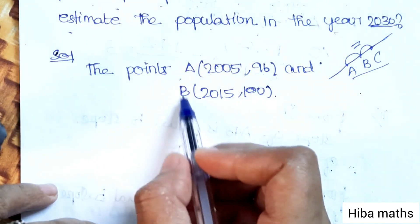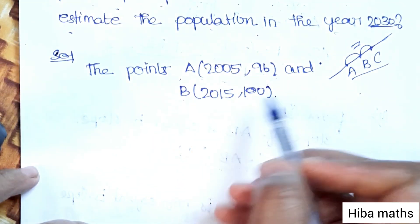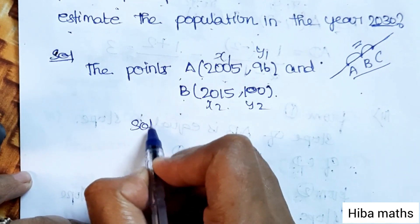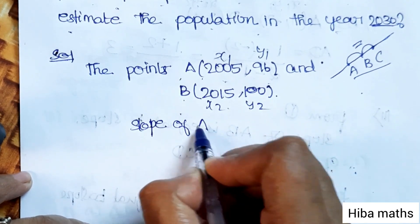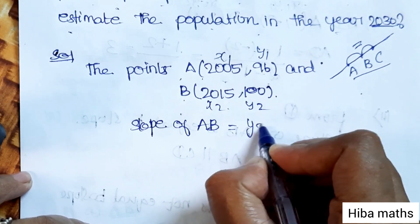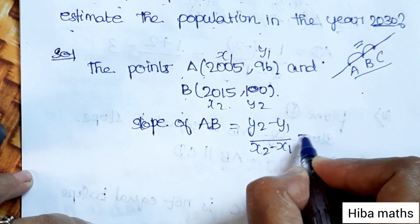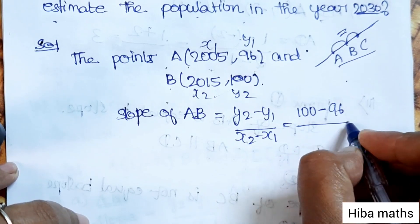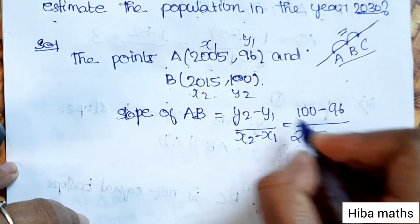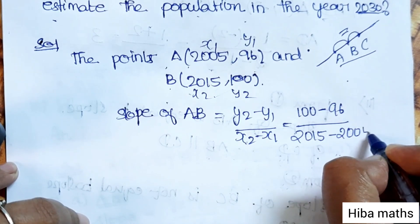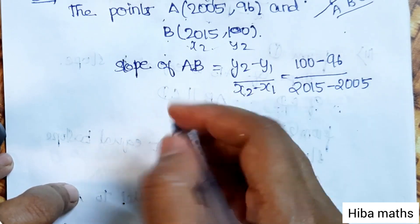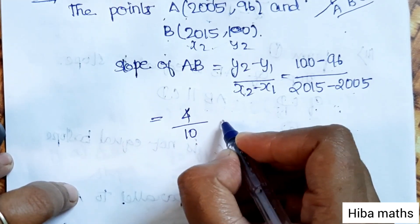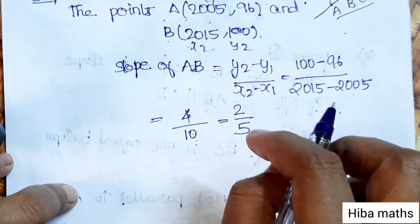Now we have to solve this. First, slope of AB: the formula gives us (y2 - y1) / (x2 - x1) = (100 - 96) / (2015 - 2005). If you solve it: 100 minus 96 is 4, and 2015 minus 2005 is 10. Simplifying 4/10 gives slope of AB = 2/5.